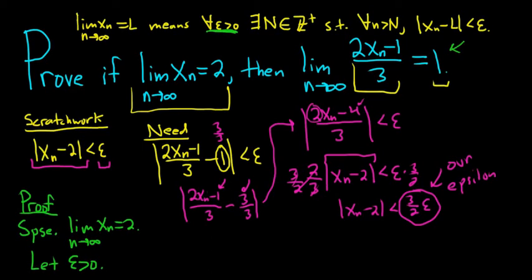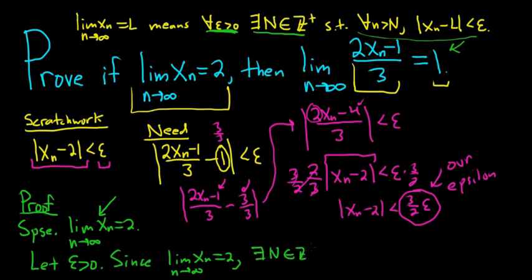Now we have to find N. It says there exists an N in the set of positive integers such that all of this stuff is true. Well, the N is going to come from this assumption. So since the limit as n approaches infinity of x_n is equal to 2, there exists a positive integer N such that we can make the distance between x_n and 2 small. Well, how small do we want it? Well, we know from our scratch work that it has to be smaller than 3 halves epsilon. So we wouldn't know this if we hadn't gone through all of the scratch work. That's the part that's often missing in textbooks. Is how to come up with the proof. That's actually the hard part.